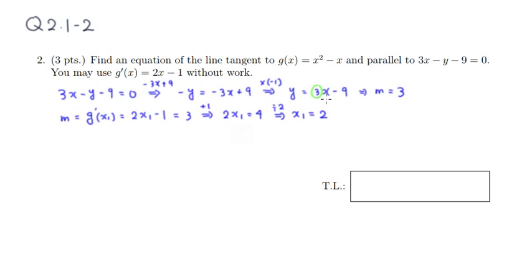Once you have x1, we can find y1 by simply plugging in the x1 value, which is 2, to the original function. So the original function is 2x squared minus x. So 2 squared minus 2, 4 minus 2, so that would be 2.